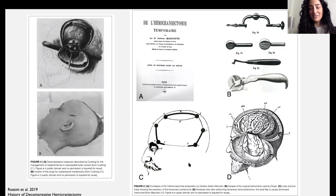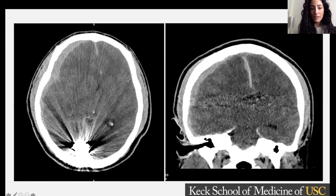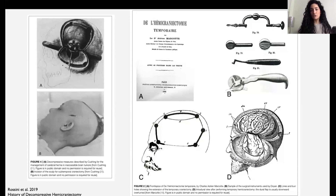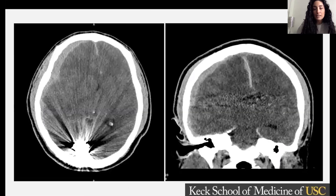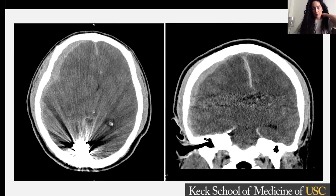We now have a power drill instead of a hand drill, but we still essentially just make holes, connect the holes, and take the skull off. There's a lot of room for innovation in neurosurgery, and it's very evident that especially in the setting of TBI, once the brain takes a really bad hit there's not much we can do. One of the main things we focus on is trying to relieve that obstructive skull, because we know that brain is going to swell.